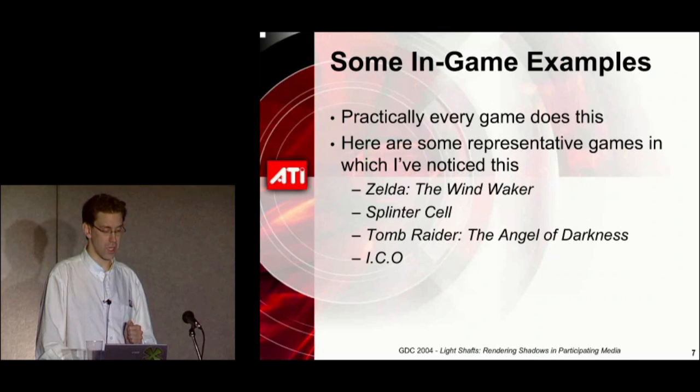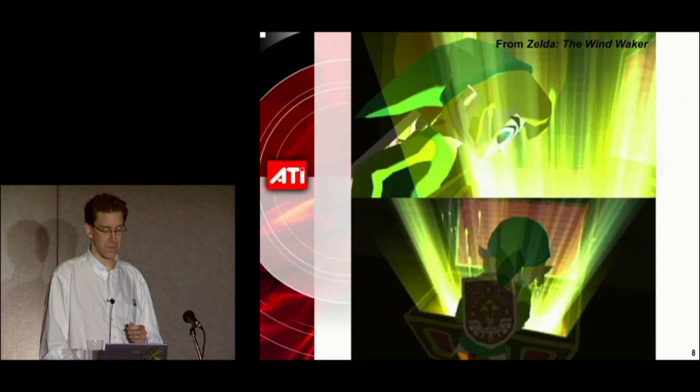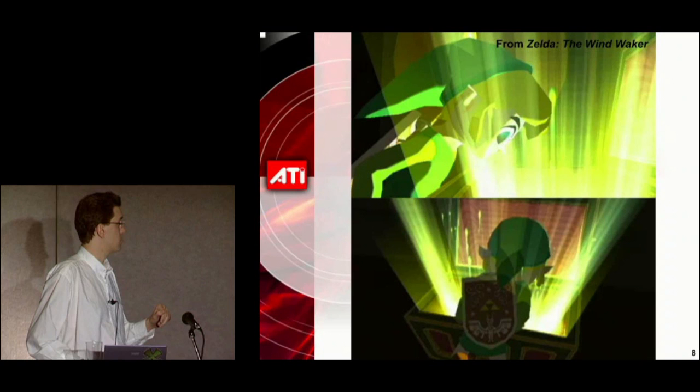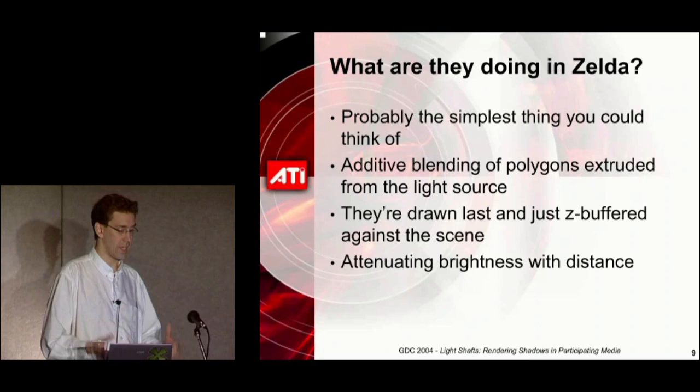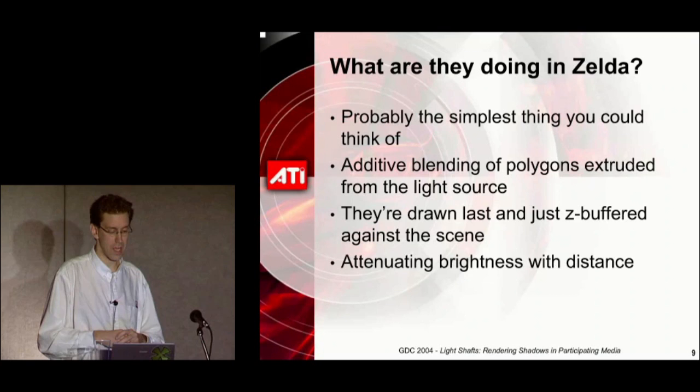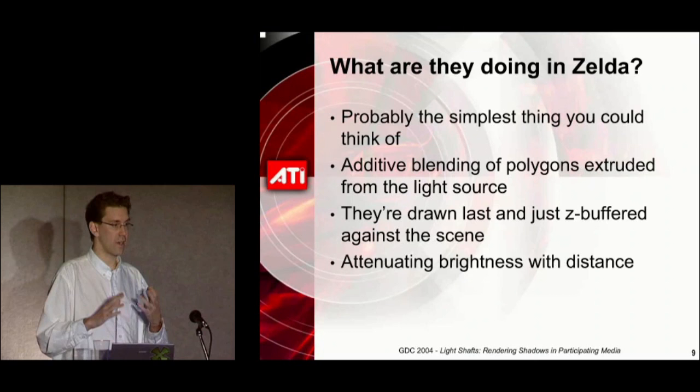Here are some shots from Zelda Wind Waker. You can see when Link opens that treasure chest, a bunch of light comes out — the idea being that it's scattering off particles in the air and scattering back to your eye. Probably the simplest thing you could do: just a bunch of additive blended polygons extruded out of that box shape, maybe a few others thrown in for flavor and complexity.